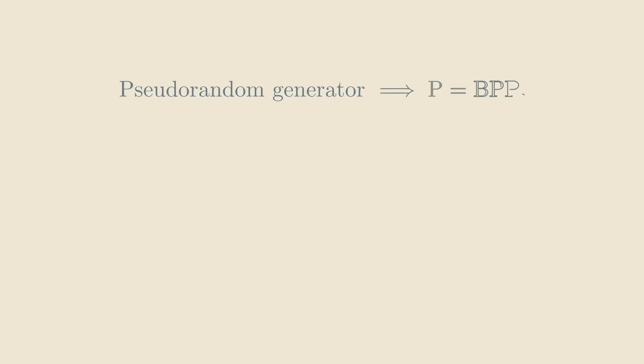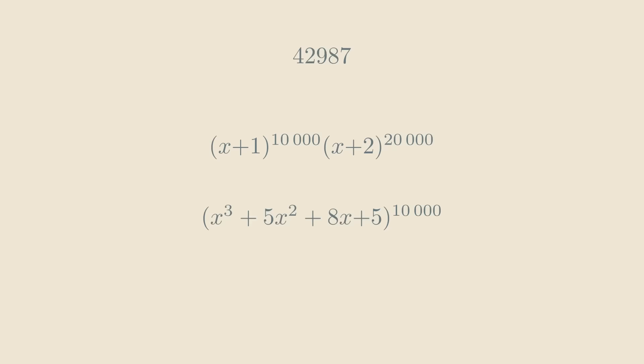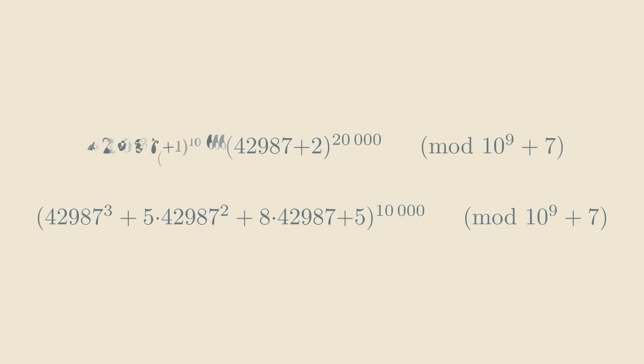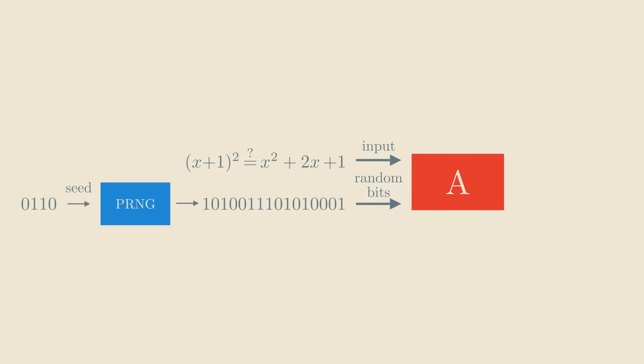Okay, now that we have this powerful pseudorandom generator, we can prove that P equals BPP. Let's demonstrate this on the randomized algorithm we saw earlier for checking whether two polynomial expressions are equal. Let's call this algorithm A and we'll represent it with a box with two input wires, one for the actual input, and one for the random bits.